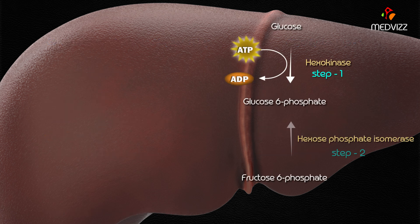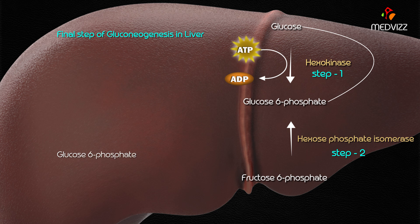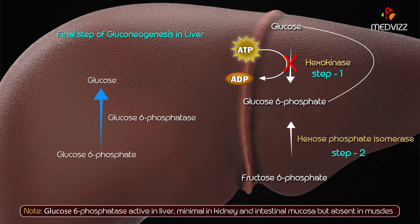Fructose 6-phosphate is isomerized to glucose 6-phosphate by the freely reversible reaction catalyzed by hexose phosphate isomerase, which is step 2 of glycolysis. Finally, glucose 6-phosphate must be converted to glucose. This step is bypassed by glucose-6-phosphatase, located in the liver, which converts glucose 6-phosphate to glucose. This enzyme is absent in muscle but present to a lesser extent in the kidney and intestinal mucosa.